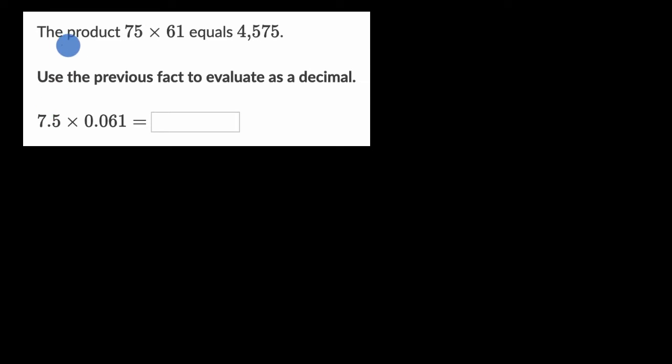This is an exercise from Khan Academy. It tells us that the product 75 times 61 equals 4,575. Use the previous fact to evaluate as a decimal 7.5 times 0.061. Pause this video and see if you can have a go at it.